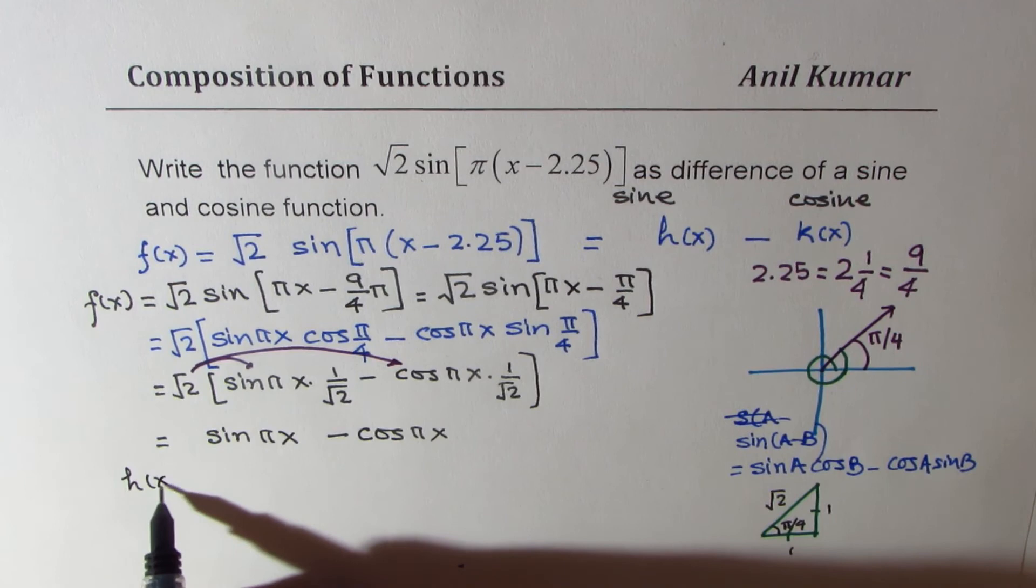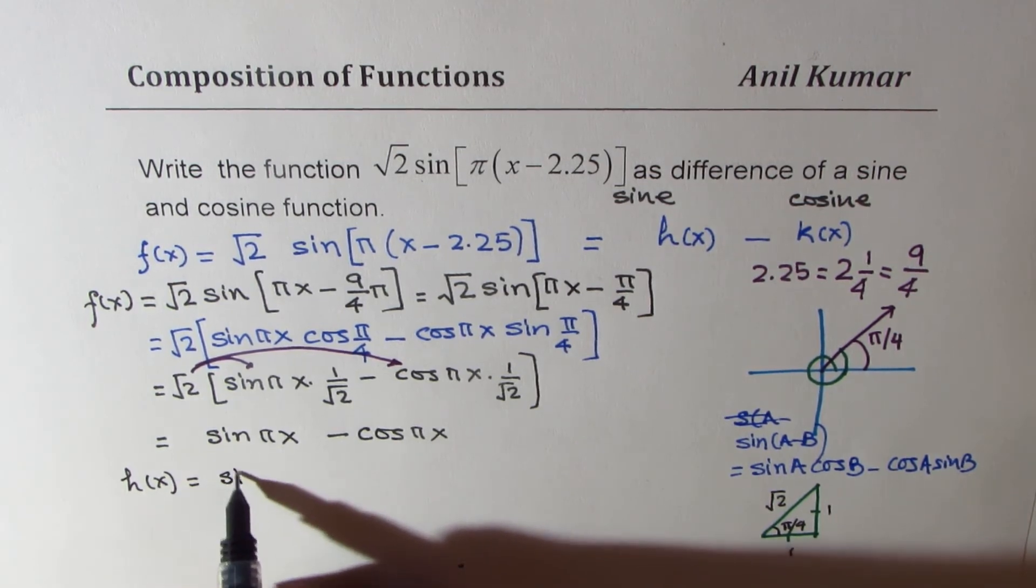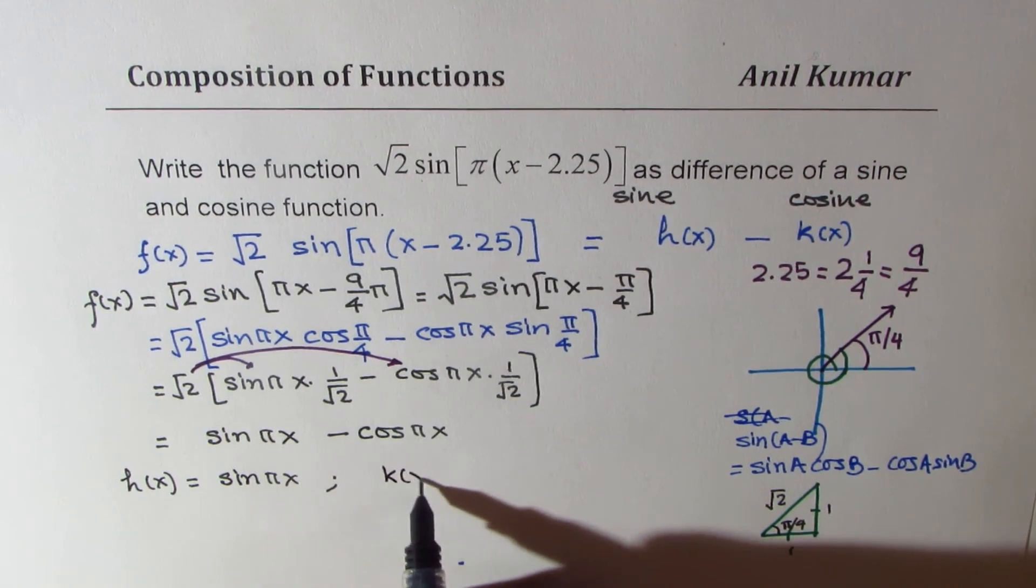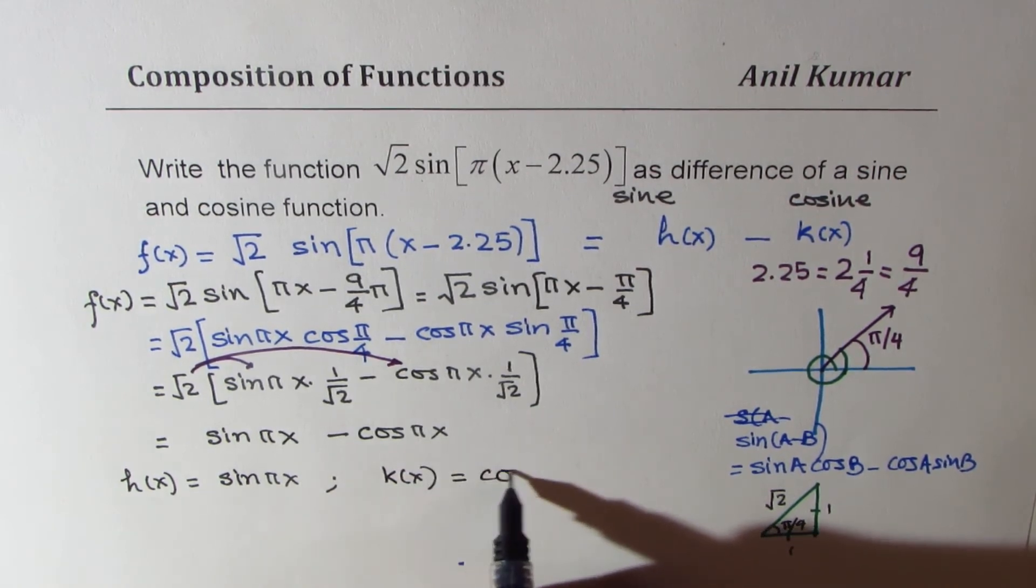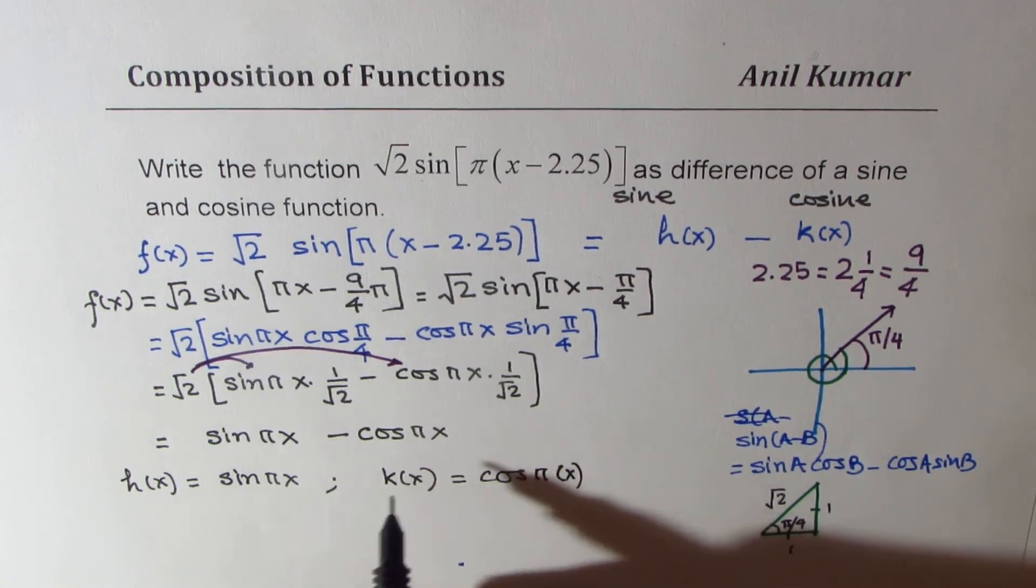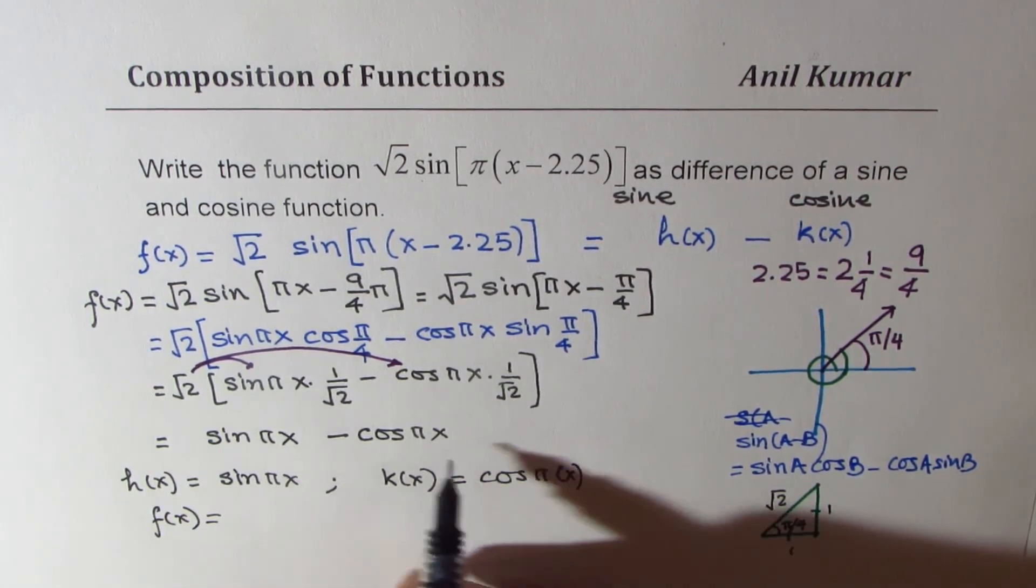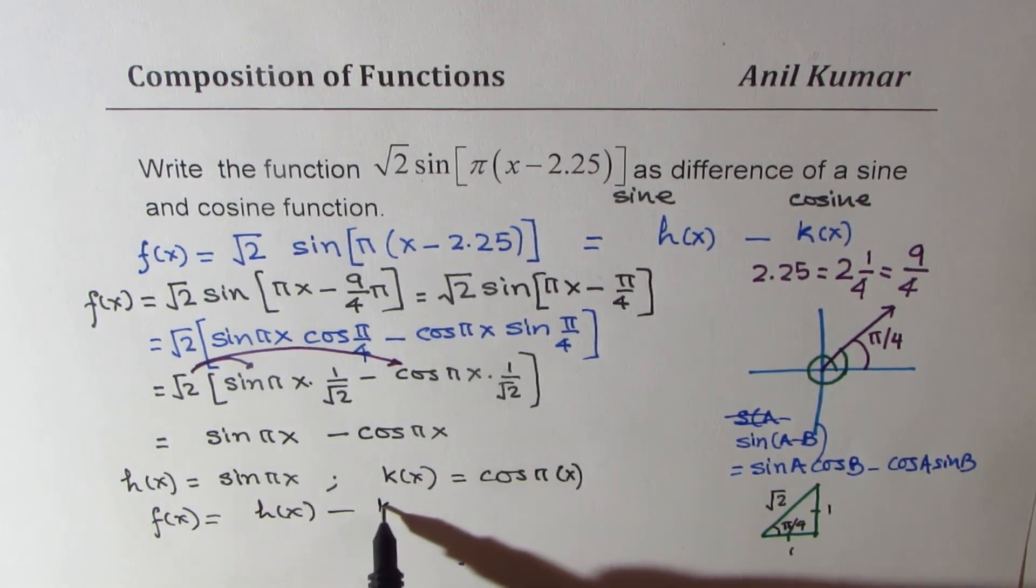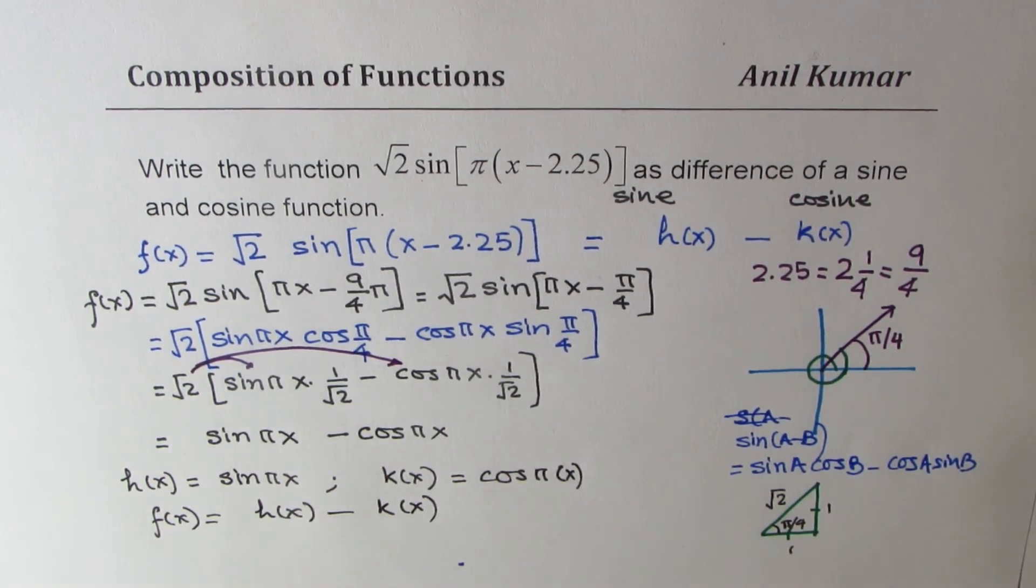So that is how you could write it as a combination of two functions, where you can see that h of x equals sine pi x and k of x equals cos pi x. So therefore, we can write f of x as combination of these two, which is h of x minus k of x. Do you understand this?